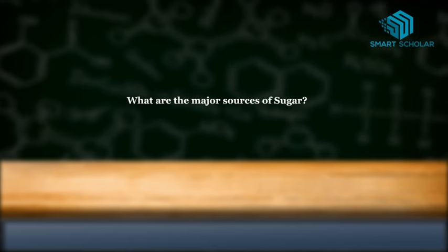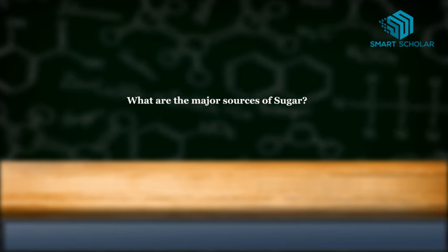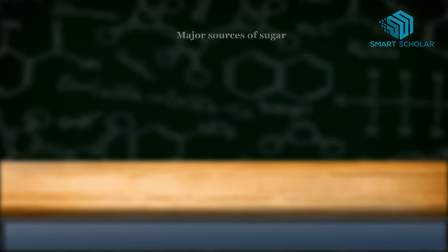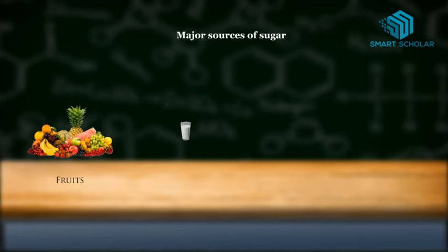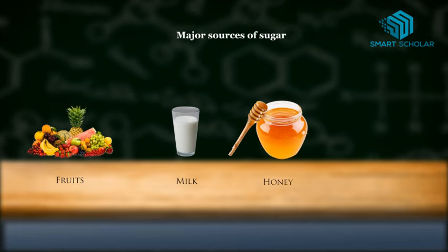What are the major sources of sugar? Major sources of sugar are fruits, milk, honey, and jaggery.